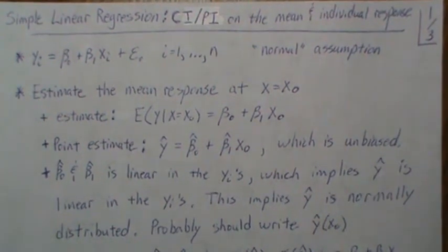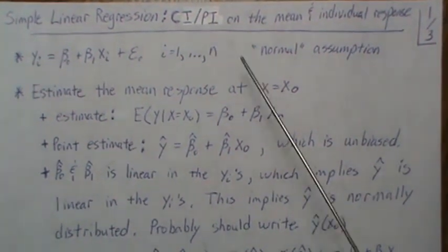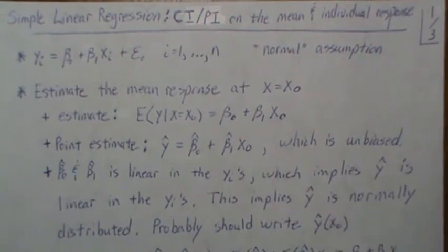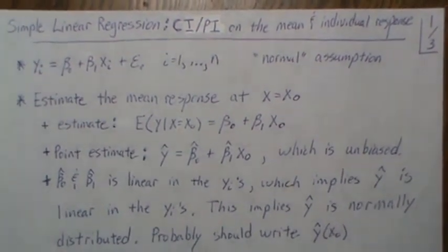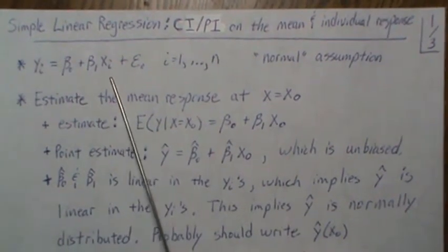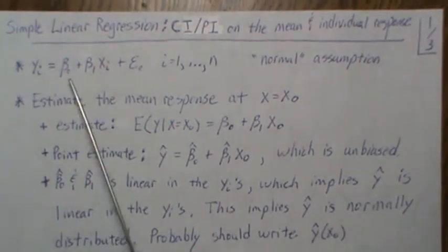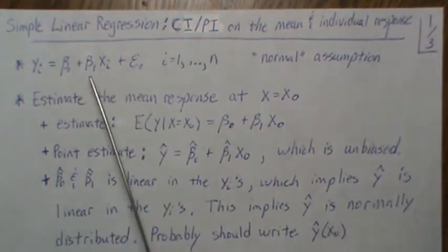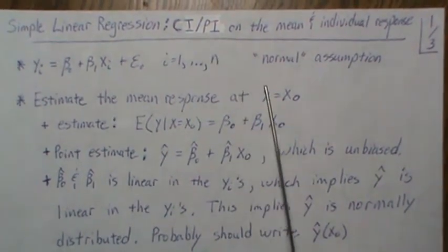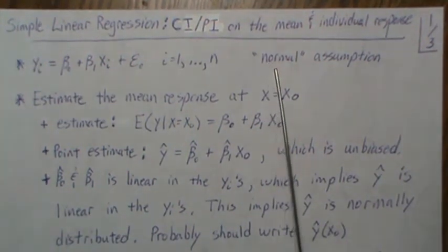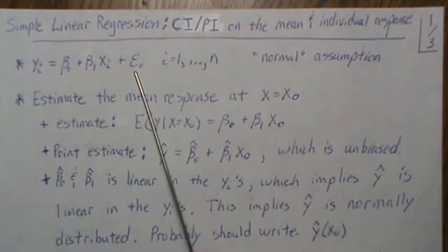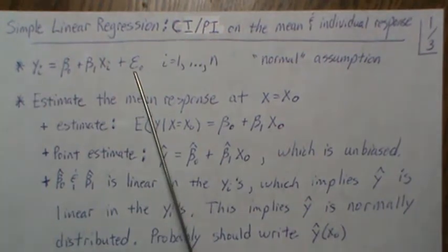Hello, this is the next video in simple linear regression. Here we're going to look at a confidence interval for the mean response and a prediction interval on an individual response for a given x. As a reminder, we're in the simple linear regression setting, where our data y follows a line with some error. Since we're developing confidence intervals and prediction intervals, we need to assume a distribution — specifically the normal assumptions, where the epsilon term is normally distributed with mean zero, constant variance sigma squared, and they're independent from one another.